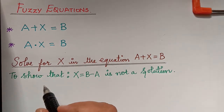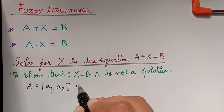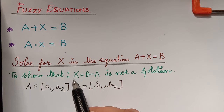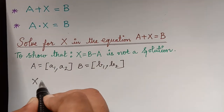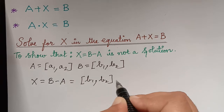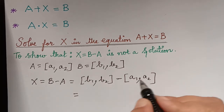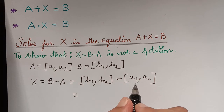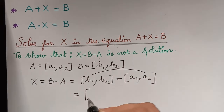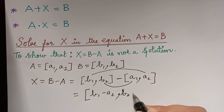In order to show this, we consider the closed intervals A = [a1, a2] and B = [b1, b2]. Now x = b - a equals [b1, b2] - [a1, a2]. Using the interval arithmetic subtraction property we have already learned, this gives x = [b1 - a2, b2 - a1].